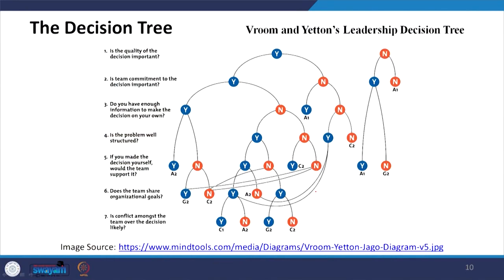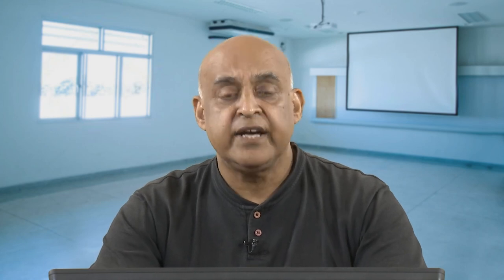The first question in the Vroom-Yetton leadership decision tree is: is the quality of the decision important? If no, then: is team commitment to the decision important? If also no, there is no further discussion needed. If the quality is important, you proceed to: do you have enough information to make the decision on your own? And: is the problem well-structured?